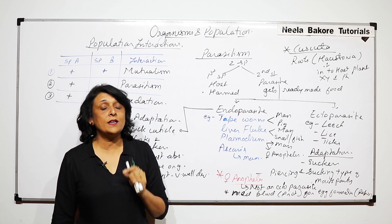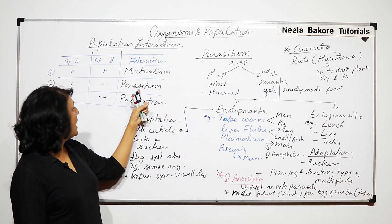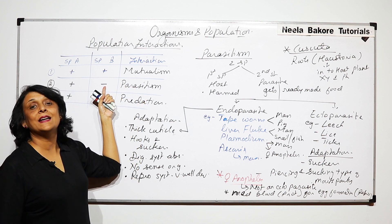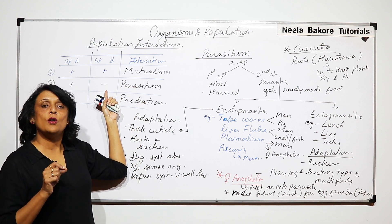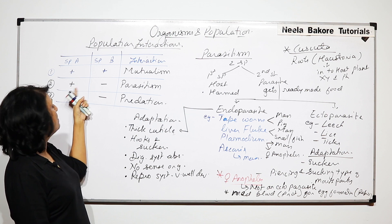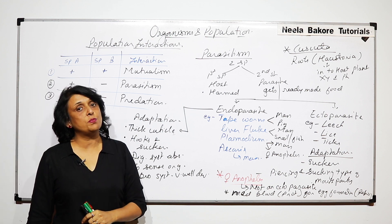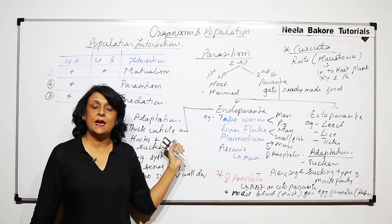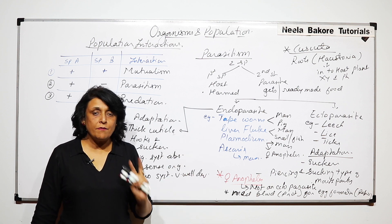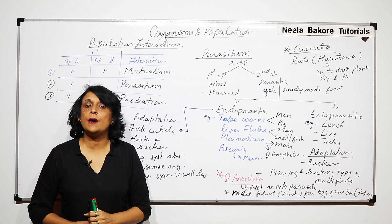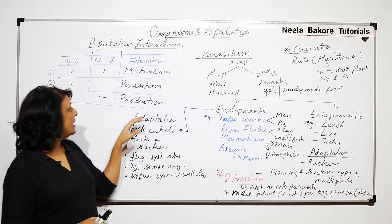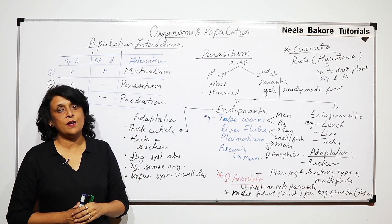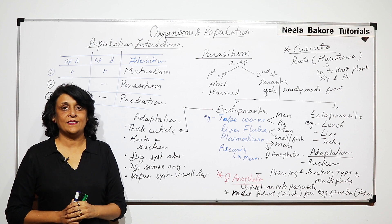The host — whether plant or animal — always suffers. Host is always harmed (minus) and the parasite always benefits (plus). The parasite can be endo or ecto, but every time it is the parasite that gets benefited. In the next part we will talk about predation and take a few examples to understand it.